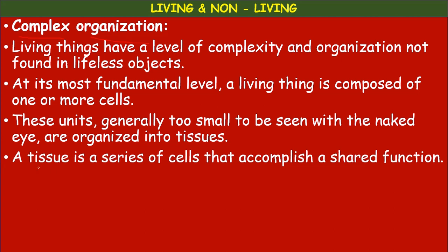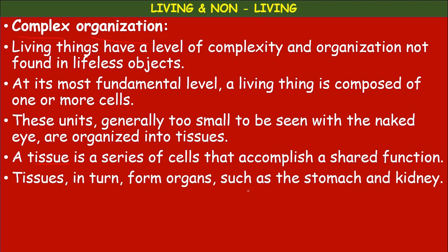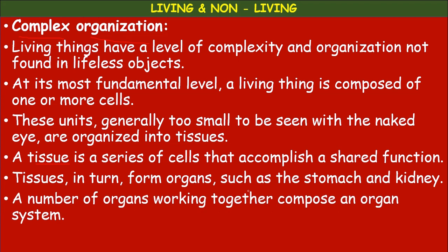Cells are organized to form tissues. A tissue is a group of cells that accomplish a shared, specific function. Tissues in turn combine to form organs such as the stomach, kidneys, liver, and lungs. A number of organs working together compose an organ system.